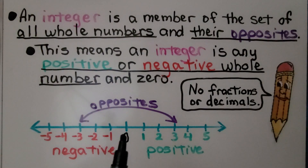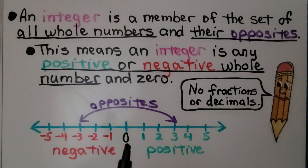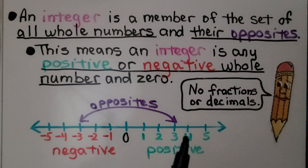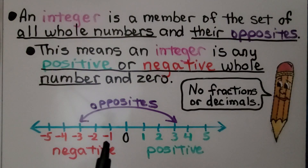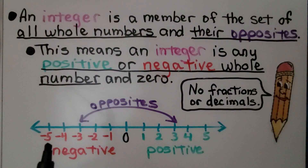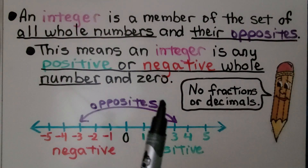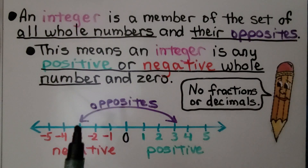We can see zero in the center. The positive numbers are to the right: one, two, three, four, five. The negative numbers are to the left of zero: negative one, negative two, negative three, negative four, negative five. The opposites are the same distance from zero.